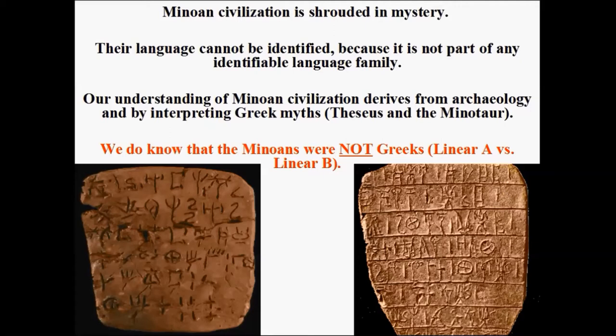The similarity between Linear A and Linear B is that both scripts tend to be bureaucratic, administrative scripts. This is in part because Minoan society was based on an economy of redistribution, in which the ruling class had to keep a careful record of agricultural and other goods that came into the palace complex, in order to be redistributed back out to the population depending on whatever formula the ruling class had in place.